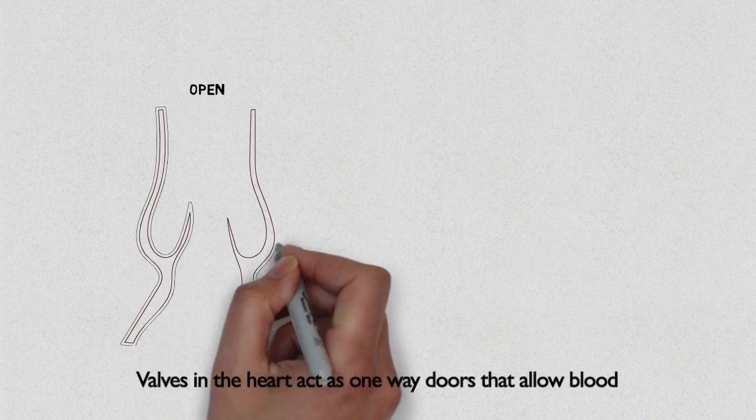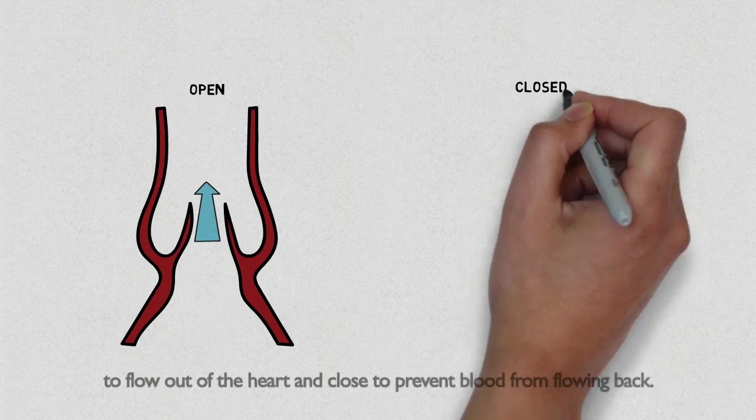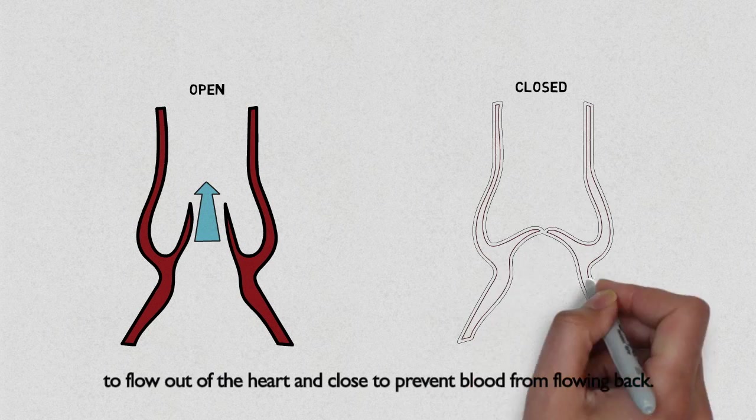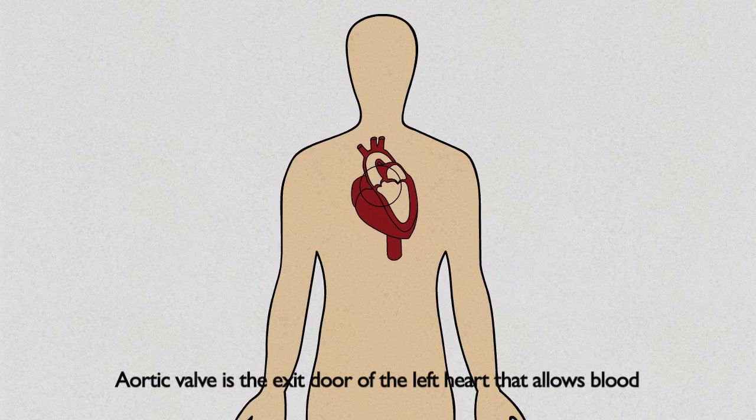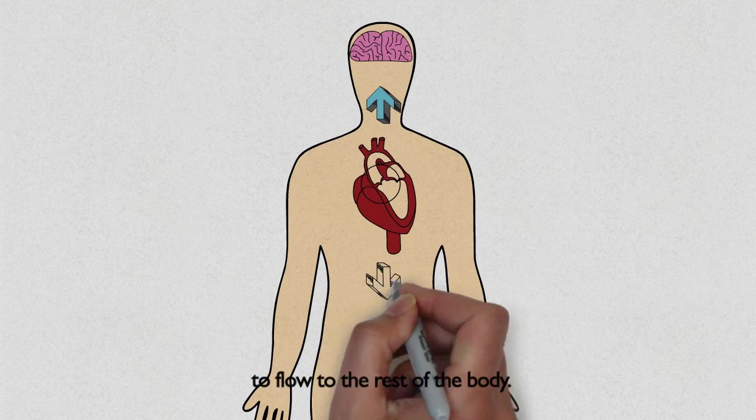Valves in the heart act as one-way doors that allow blood to flow out of the heart and close to prevent blood from flowing back. The aortic valve is the exit door of the left heart that allows blood to flow to the rest of the body.